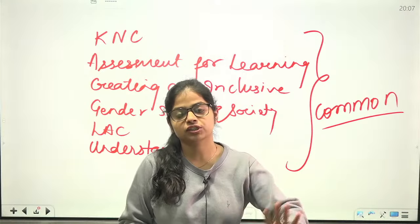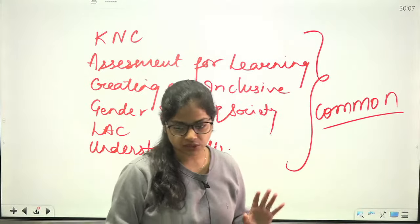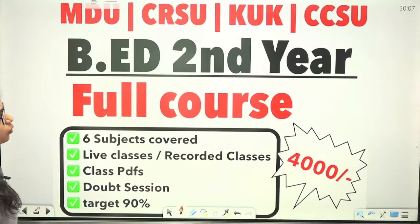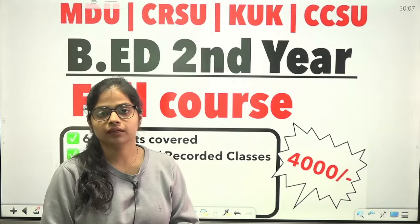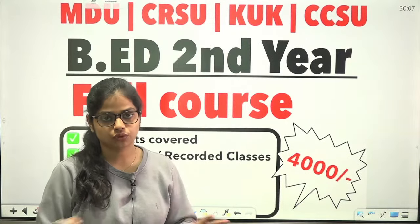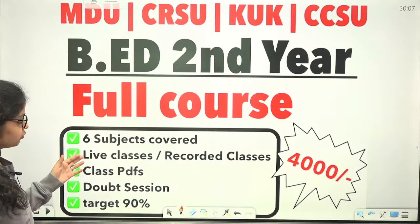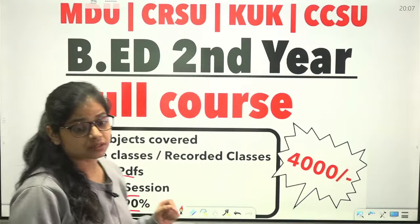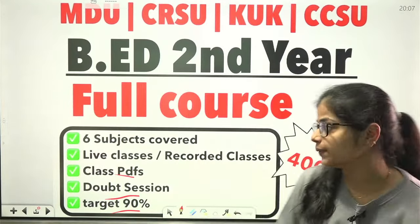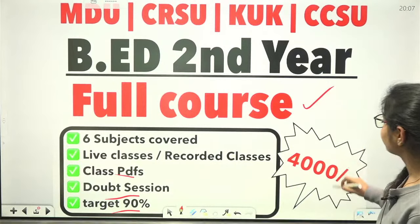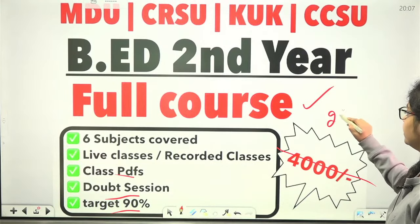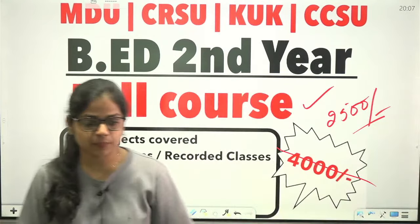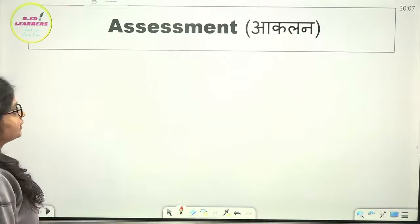Some students take an additional subject like physical yoga or another elective. Now let me tell you how we will cover this course. It will be recorded as well as live. All 6 subjects will be covered, class PDFs will be given, doubt sessions will be held. The target we are setting is 90%. The course price is ₹2500 — it is currently discounted from ₹4000. You can absolutely join it.